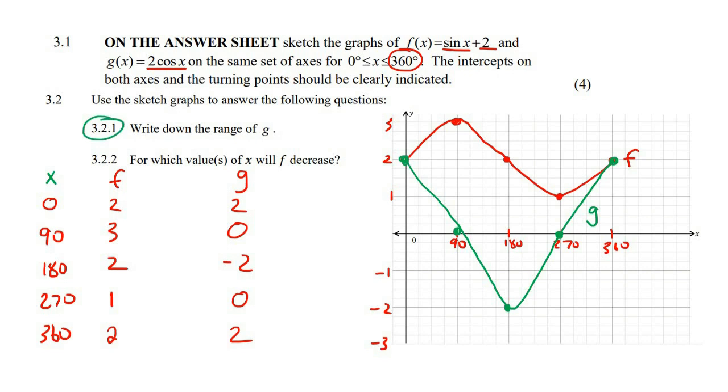Now, this question says, write down the range of g. So the range, and I just wanted to add the marker location over there. So the range is the y values. So you could either write it like this, you could say y is an element. Now the graph of g goes from minus two, so you start with the lowest value first, and then it goes up to positive two, like that. If you prefer set builder notation, you could say that y is bigger than or equal to minus two, and smaller than or equal to positive two.